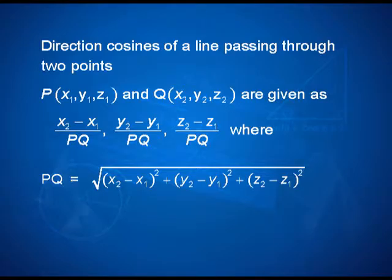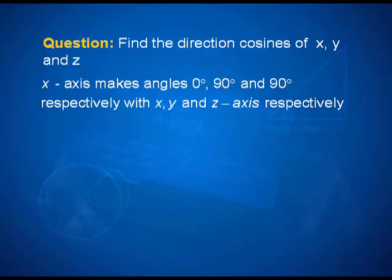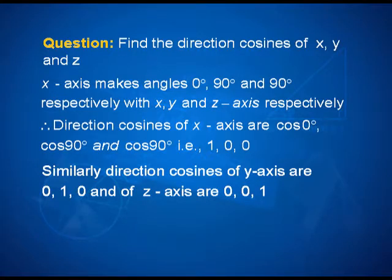Now try this exercise: find the direction cosines of the x, y, and z axes. The x-axis makes angles of 0°, 90°, and 90° with the three axes respectively. Therefore, the direction cosines of the x-axis are cos 0°, cos 90°, cos 90° — that is, 1, 0, 0. Similarly, the direction cosines of the y-axis are 0, 1, 0, and of the z-axis are 0, 0, 1. These quantities will play an important role in future discussion.